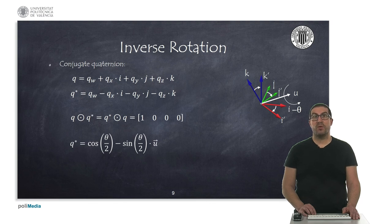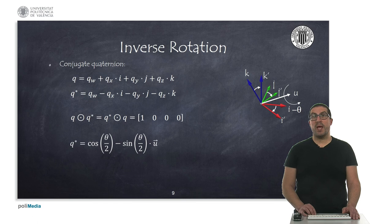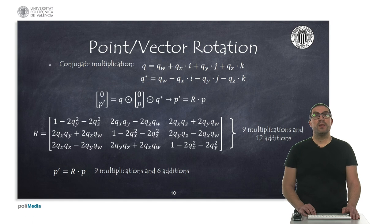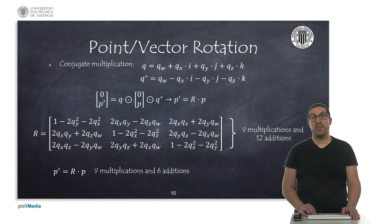To obtain the inverse of a rotation using quaternions, it is a very simple operation because we just simply compute the conjugate quaternion, which implies that the last three elements are simply negated. We can easily verify that both left and right multiplications of the conjugated quaternion make the resulting orientation equivalent to a zero rotation operation. If we want to perform the rotation operation on a point or vector, we must first construct the quaternion associated with the point, pre-multiply it with the rotation quaternion, and post-multiply it with the conjugated quaternion.